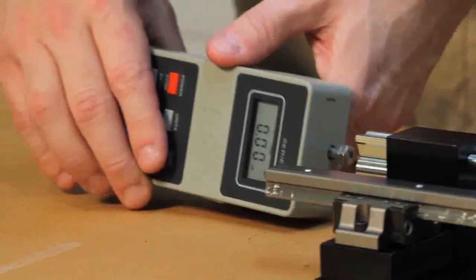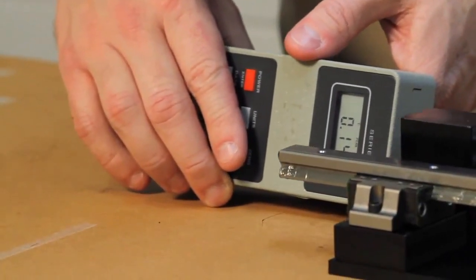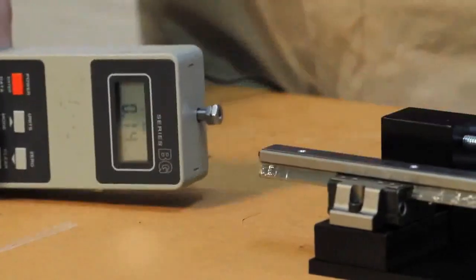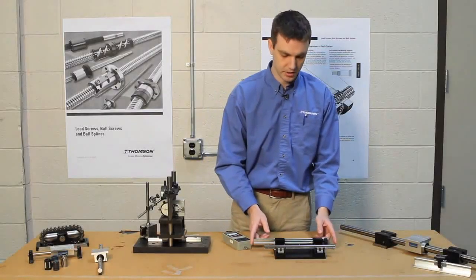First we'll start with the round rail. Push it. Okay, so the peak force is 0.14 pounds. That's very low. You can see that this moves very easily.